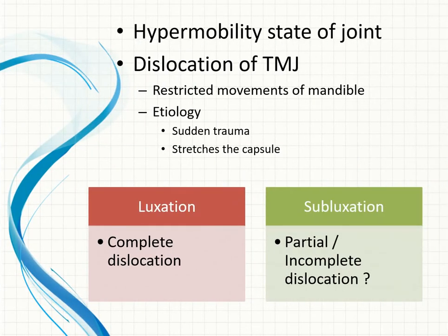The hypermobility state of the joint can manifest as luxation or subluxation. Luxation is complete dislocation of the articular disc. A partial or incomplete dislocation that allows repositioning by the patient is called subluxation. It can result from sudden trauma, stretching of the capsule, or excessive yawning, causing the jaw to suddenly lock as the condyle moves anterior to the articular eminence and cannot return.